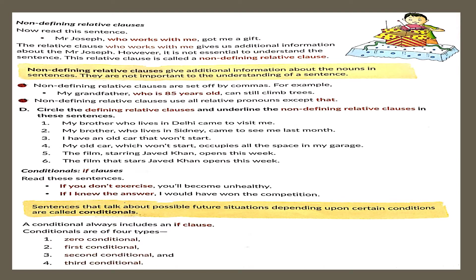Now there are some conditionals, or if clauses. Sentences that talk about possible future situations depending on certain conditions are called conditionals. They always include if clauses. There are four types: zero conditional, first conditional, second conditional, and third conditional. Zero conditional is used when talking about general truths, habits, or things sure to happen — both the if clause and the second clause are in the simple present tense.